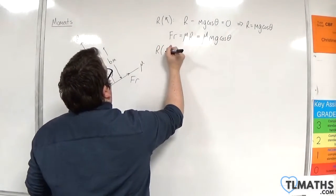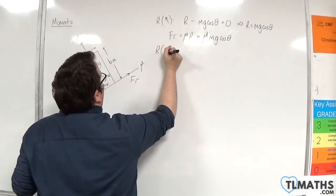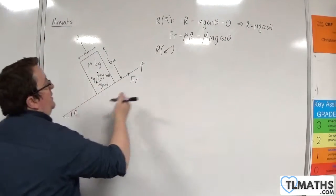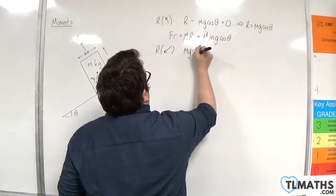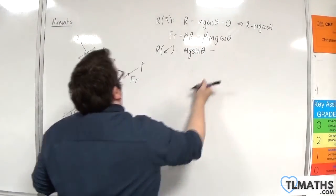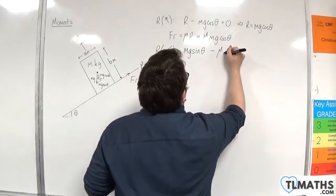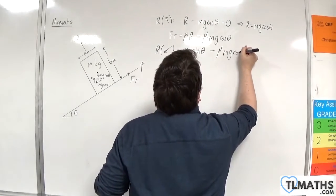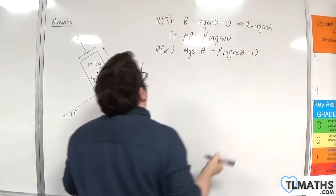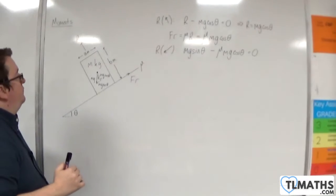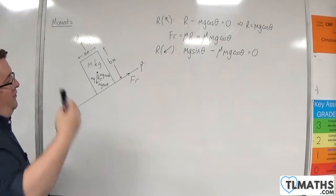Now if we resolve parallel to the slope, I'm going to take down the slope as positive. We're going to have the mg sine theta take away the friction, which is mu times mg cosine theta, and that's going to be equal to zero because we're not accelerating down the slope. We're on the point of moving.